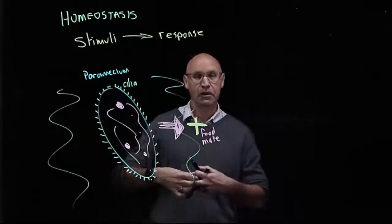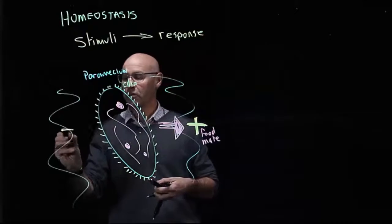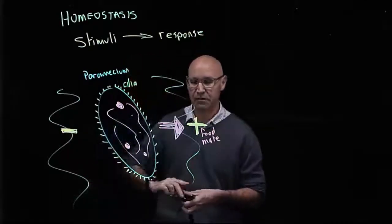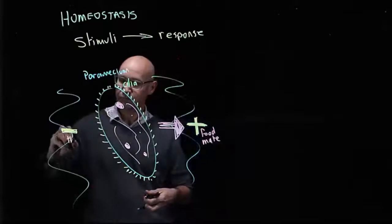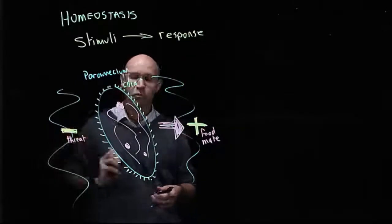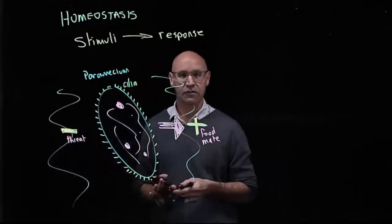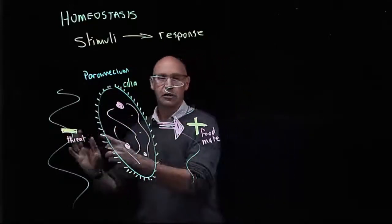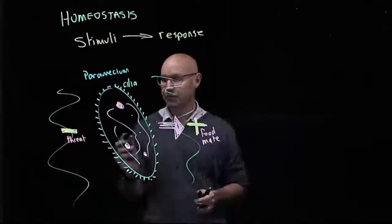But what happens if we've got a negative stimulus, something like a predator or a threat? What's the paramecium going to do? It's going to respond again by moving, but this time it's going to move away from the negative threat.